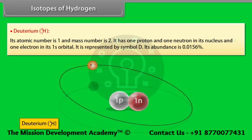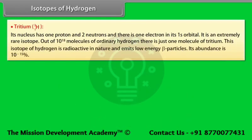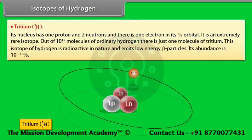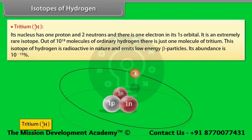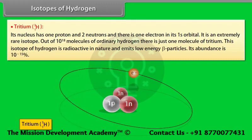Tritium: its abundance is 0.0156%. Its nucleus has one proton and two neutrons and there is one electron in its 1s orbital. It is an extremely rare isotope. Out of 10¹⁸ molecules of ordinary hydrogen, there is just one molecule of tritium. This isotope of hydrogen is radioactive in nature and emits low-energy beta particles. Its abundance is 10⁻¹⁵%.